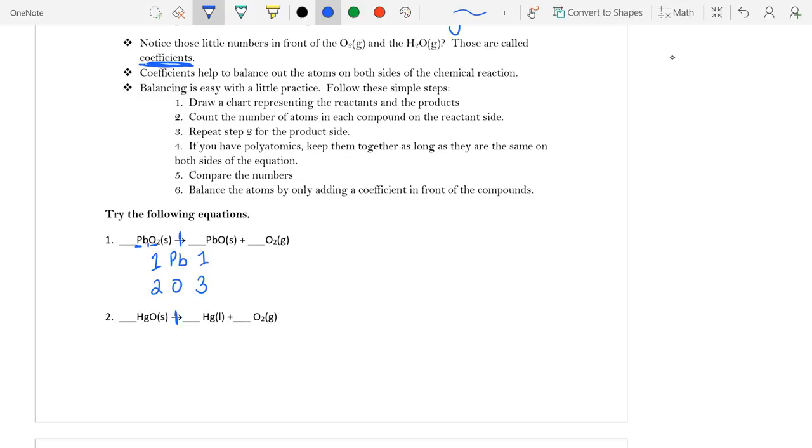And this is not balanced. I have one on each side of my leads. But on my reactant side, I have two oxygen atoms. And on the right side, I have three. Where did that third oxygen atom come from? It can't come from nowhere. So we need to balance out our reactant.